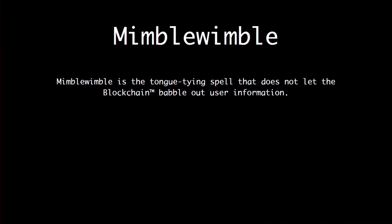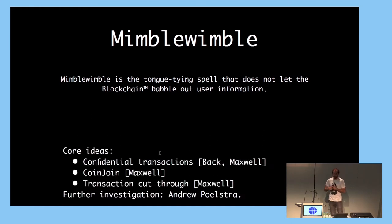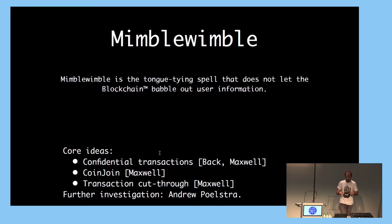MimbleWimble is a cryptocurrency that allows you to make private payments without having to download the entire blockchain — without having to download 200 gigabytes of data when you start a new client. It was proposed in 2016 by an anonymous person going by the name of Tom Elvis Juster, which is the name of Voldemort in the French version of Harry Potter, and it was built on top of three main ideas.